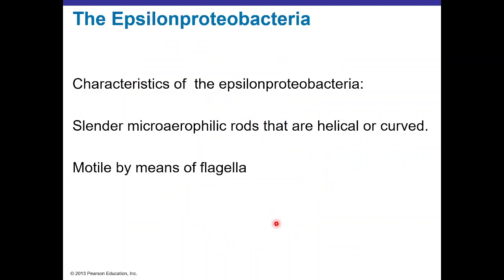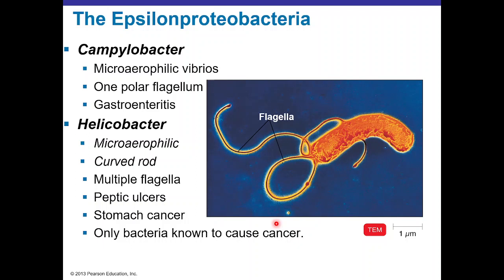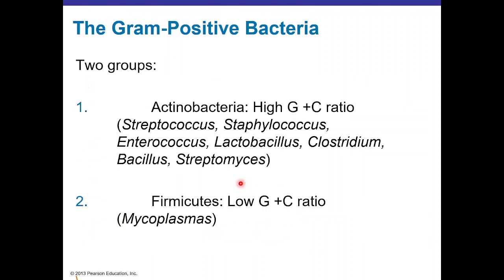Epsilon Proteobacteria are slender microaerophilic rods that are helical or curved and move by flagella. Campylobacter is a microaerophilic vibrio with one polar flagellum that causes gastroenteritis when someone ingests contaminated poultry or beef. Helicobacter is a microaerophilic curved rod with multiple flagella that infects the stomach, causing ulcers in the pylorus and potentially leading to cancer — it is the only known bacterium to cause cancer in humans.